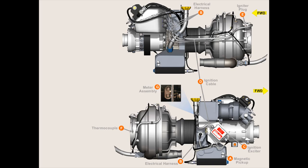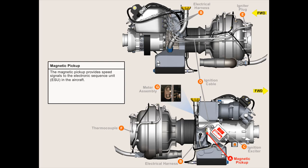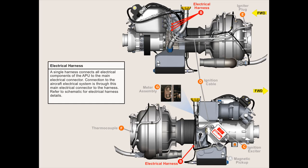The electrical system for the APU provides automatic actuation and proper sequence of the circuits which control the APU's starting, ignition, acceleration, fuel flow, and monitoring. Components of the electrical system include the magnetic pickup, electrical harnesses, ignition exciter, ignition cable, spark plug, and thermocouple and meter assembly. The magnetic pickup provides speed signals to the electronic sequence unit, ESU, in the aircraft. A single harness connects all electrical components of the APU to the main electrical connector, through which connections to the aircraft electrical system are made.